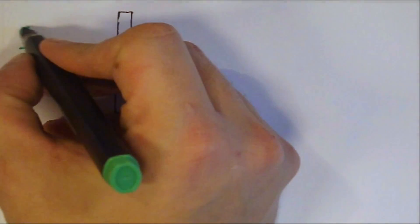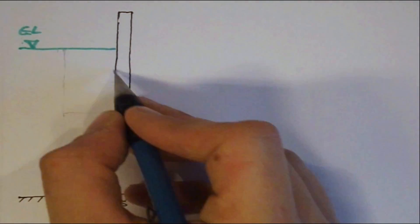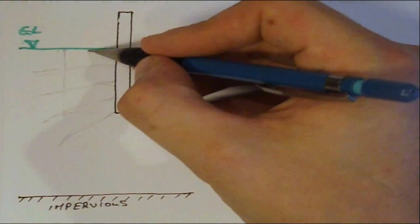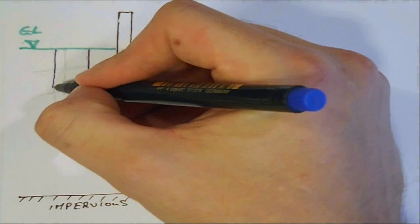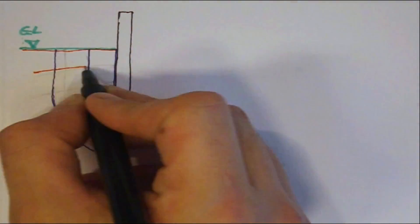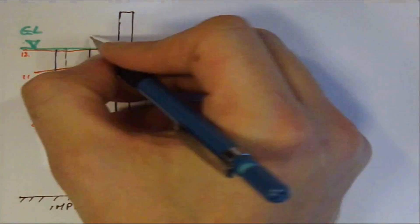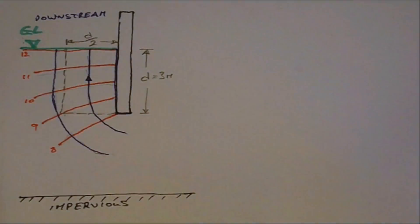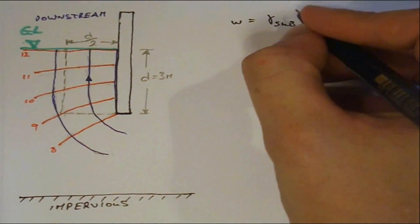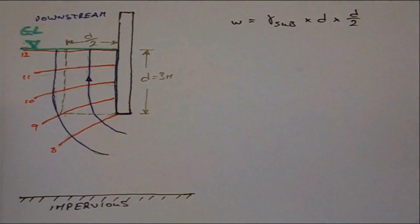The stability of soil in the region in front of the sheet pile can be determined from a flow net as follows. Consider the portion of the flow net on the downstream side of the sheet pile excavation. The effective weight of the soil prism W is equal to the submerged unit weight times D times D over 2.